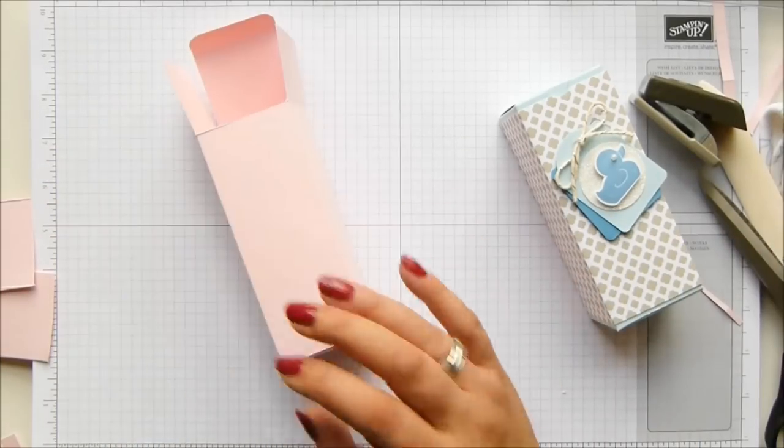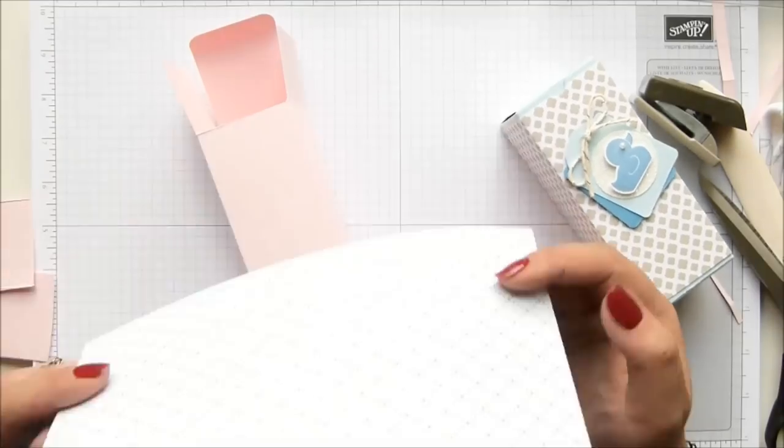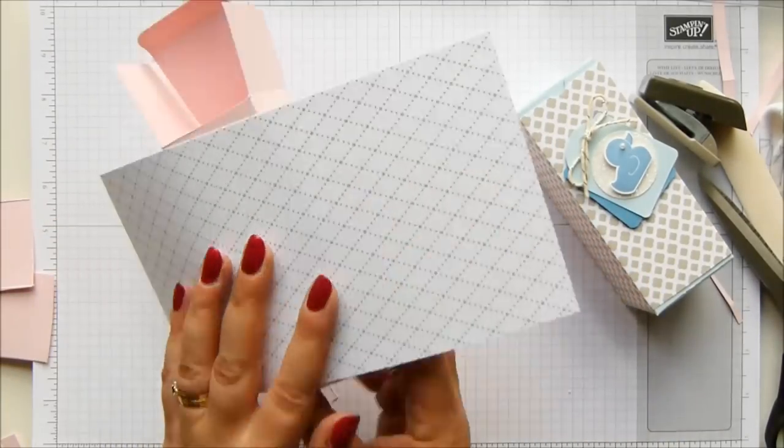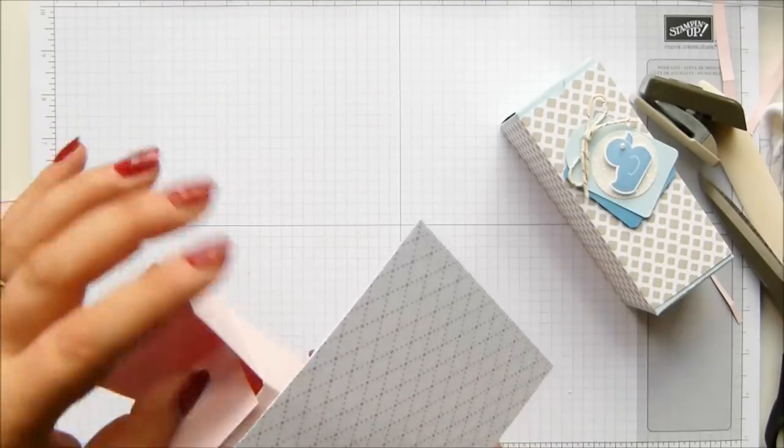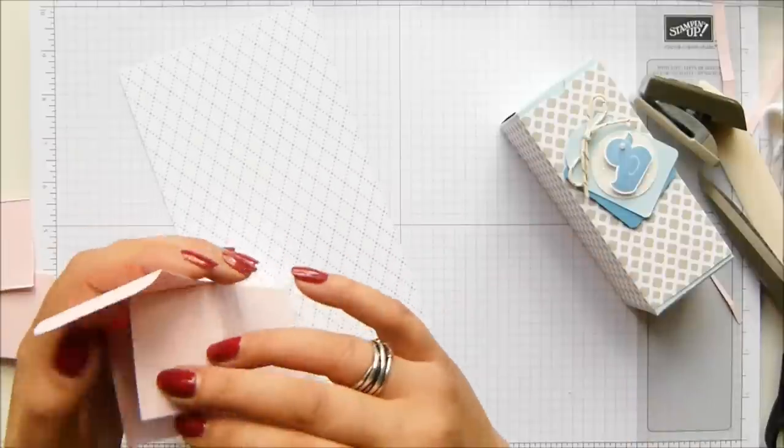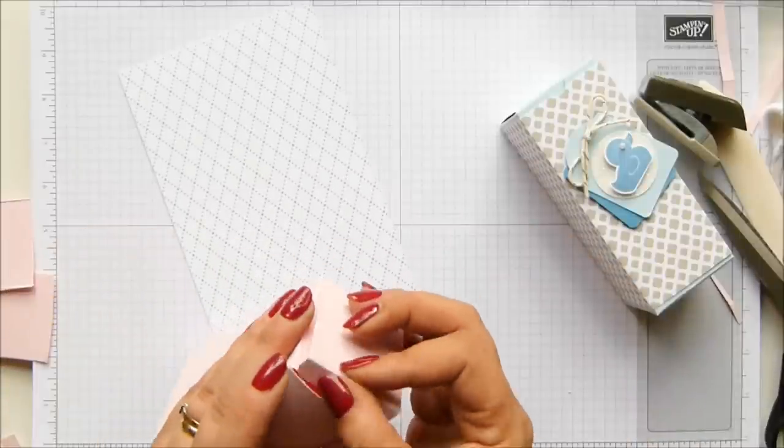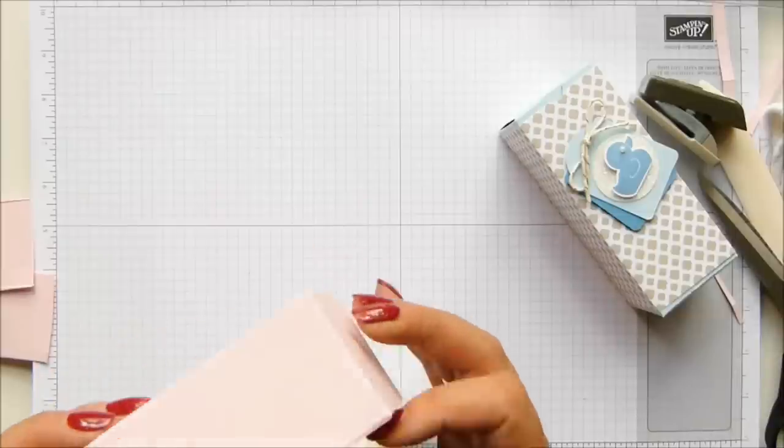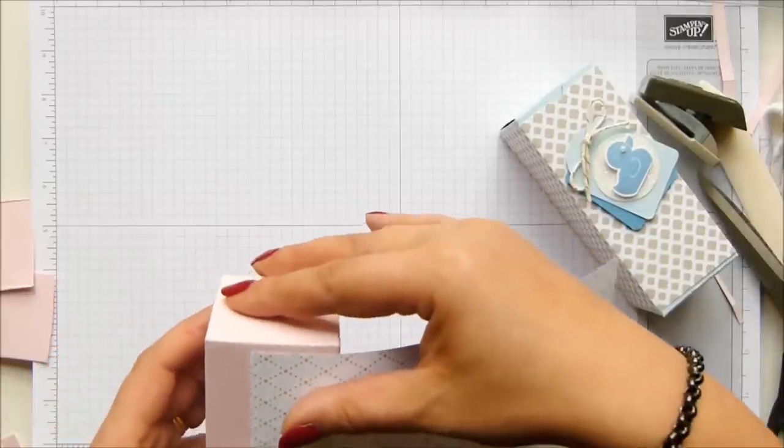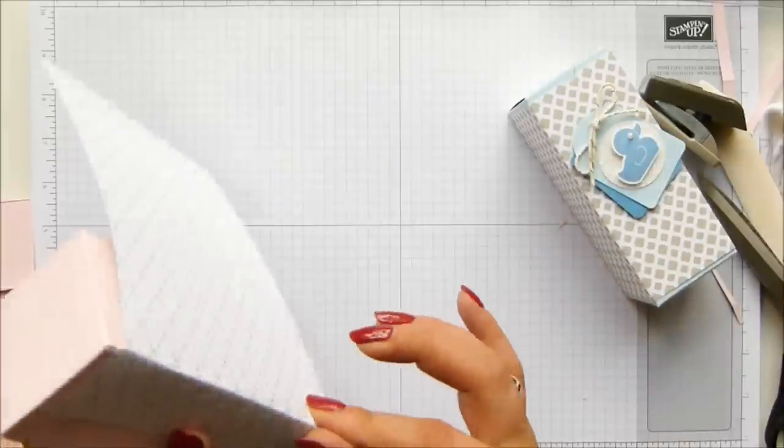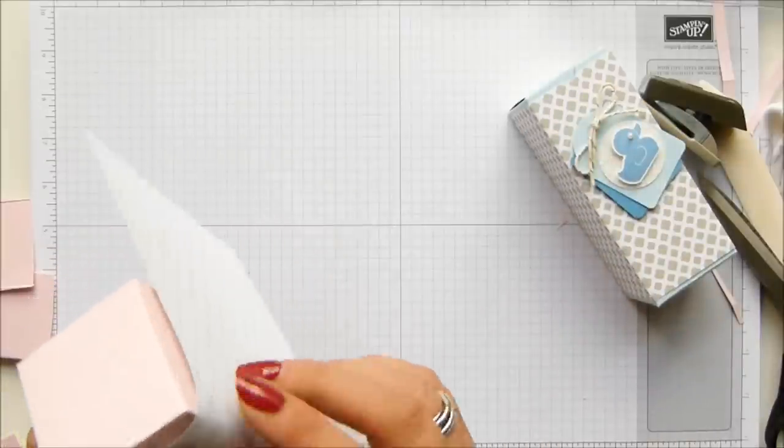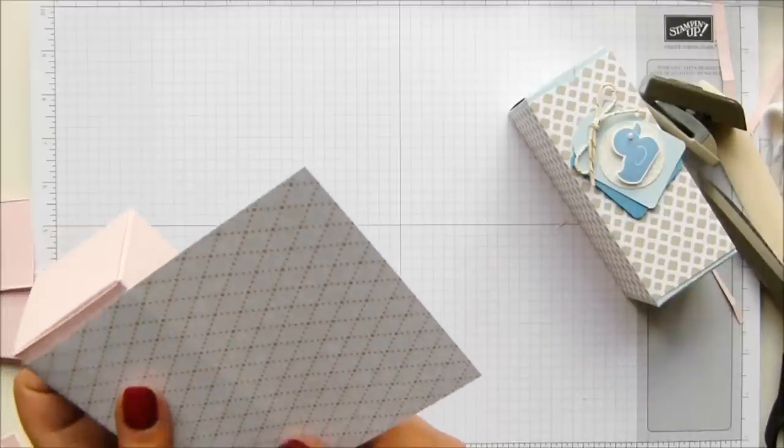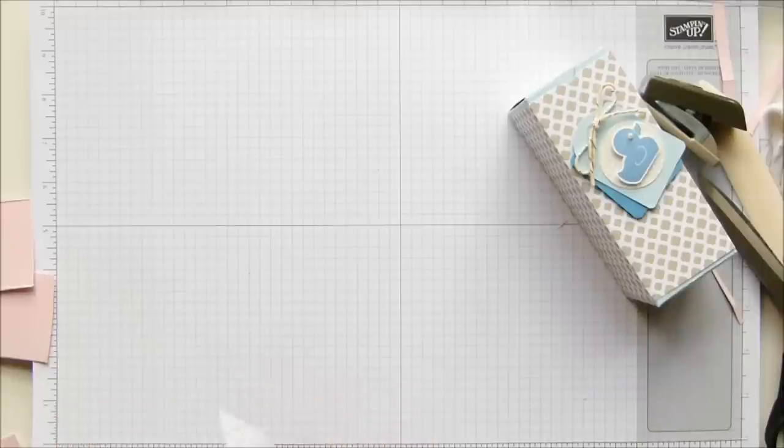Okay, piece of designer series paper that measures four and three quarters by eight and a half, or 12 by 22 centimeters, and we're just going to wrap that round. Just close it up for a second so it doesn't squish. I've gone with the Something Borrowed paper, although it's weddingey, I reckon it was quite good for baby. I'm just gently running my fingers down just roughly to create score lines.